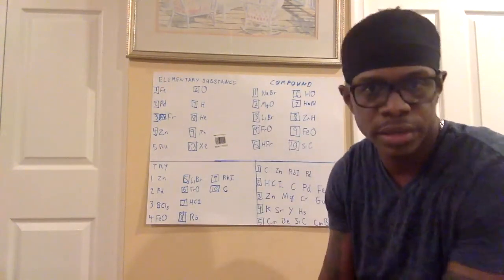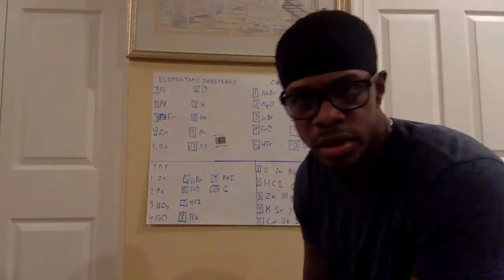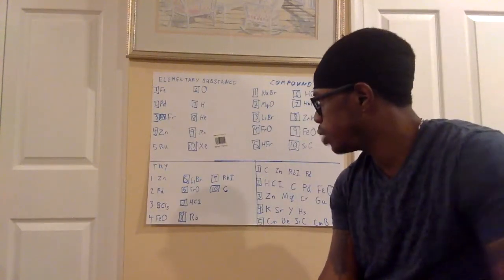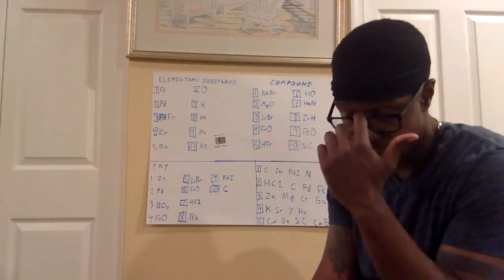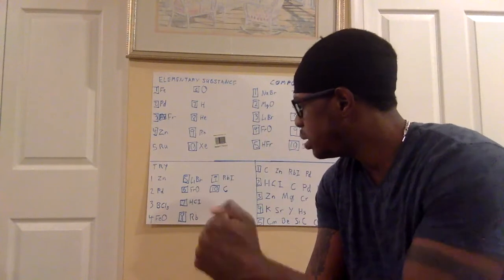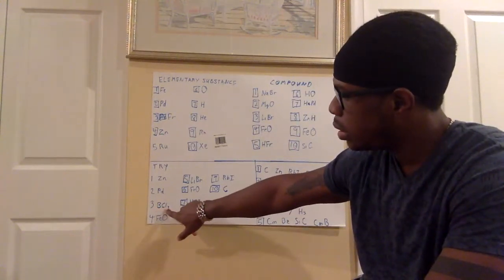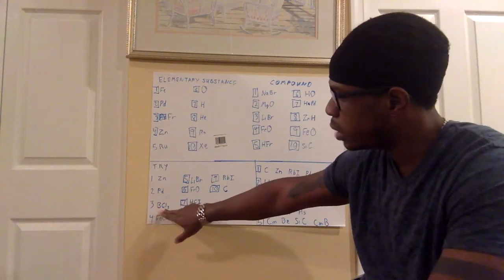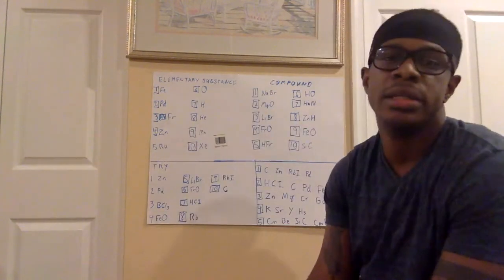We're back. You guys did the right thing and paused the video — you're only hurting yourself if you don't. Number one: ZN — the Z is capital, the N is common — that is an elementary substance. Number two: PD — the P is capital, the D is common — even though it's two letters, the second letter is common, so it is an elementary substance. Number three: BCL — B is capital and C is capital, with L being common. So B is one atom and CL is another atom — that's two, which makes it a compound.